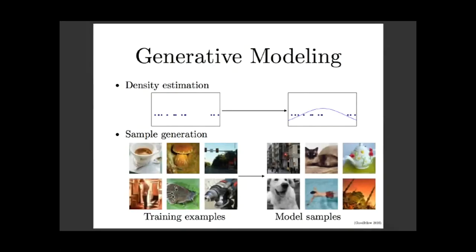The basic idea behind a generative model is to take a lot of training examples from the training set and to learn the probability distribution that generates those training examples. Some kinds of generative models can give you an estimate of the function that defines that probability distribution; other generative models can give you new samples that come from that same distribution.